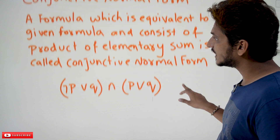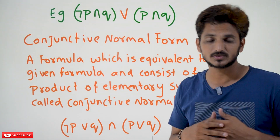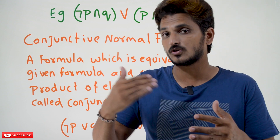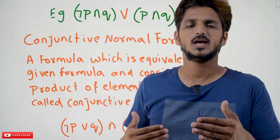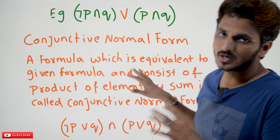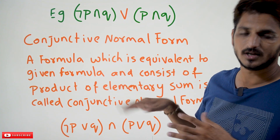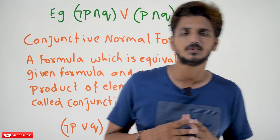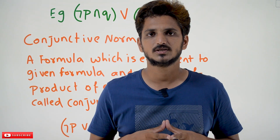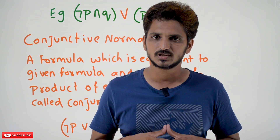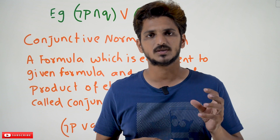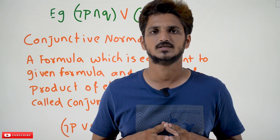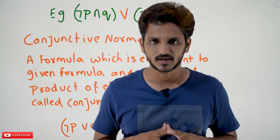In our next classes, we are going to do some practice examples on how to convert a given proposition into disjunctive normal form and conjunctive normal form. These are the basics to understand for our next classes. Hope you understand this class. If you have any questions regarding the concept, please post them in the comment section below. Thanks for watching — please subscribe to our channel and press the bell icon for the latest updates. Thank you.